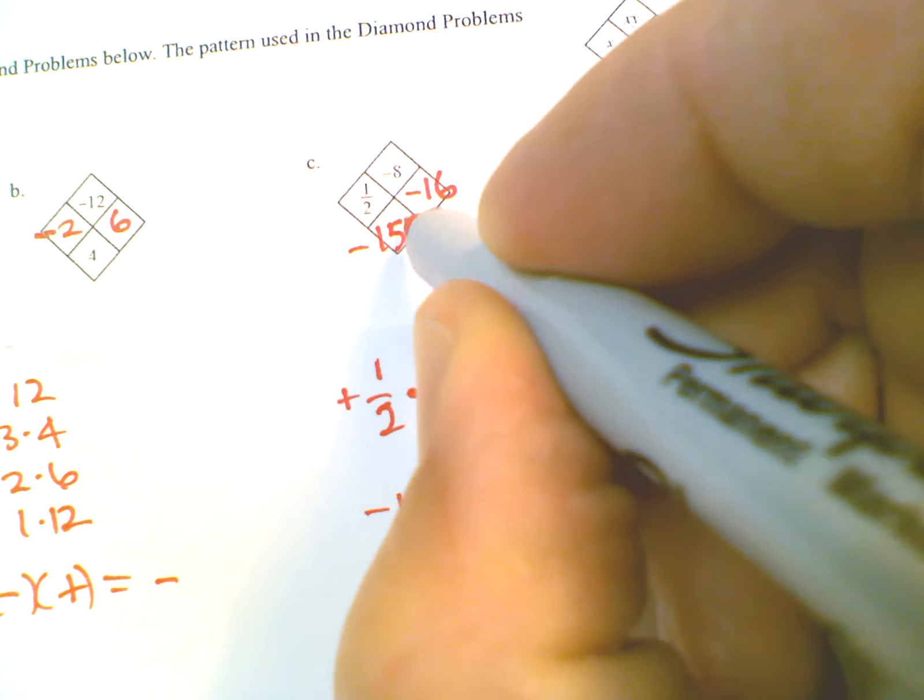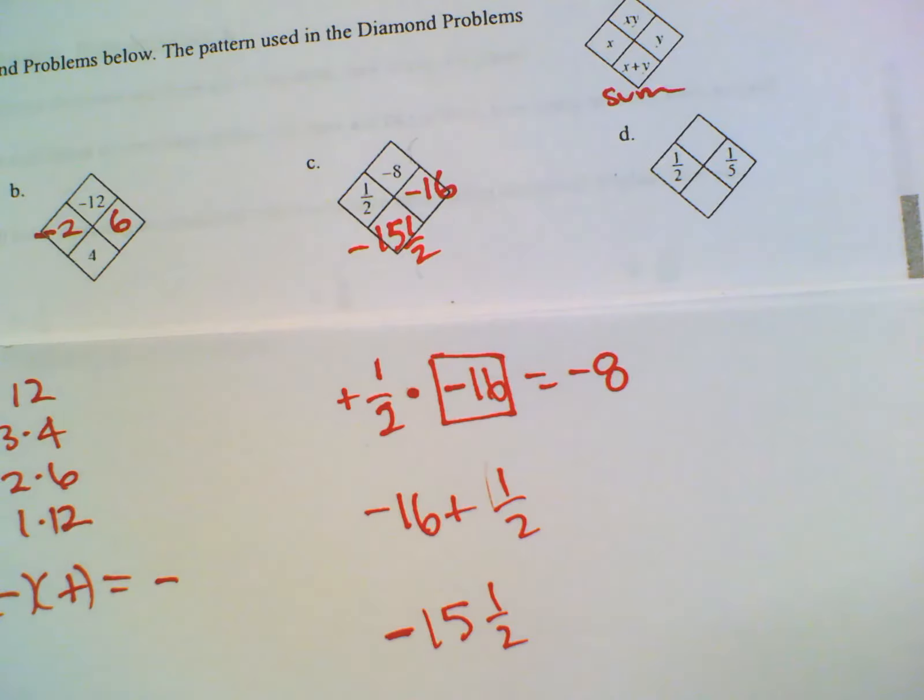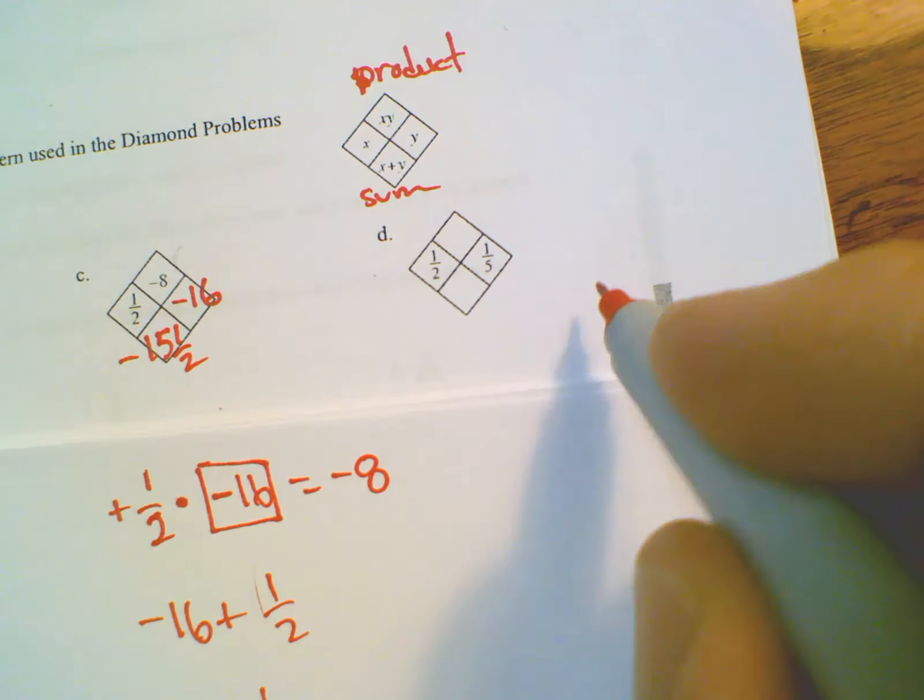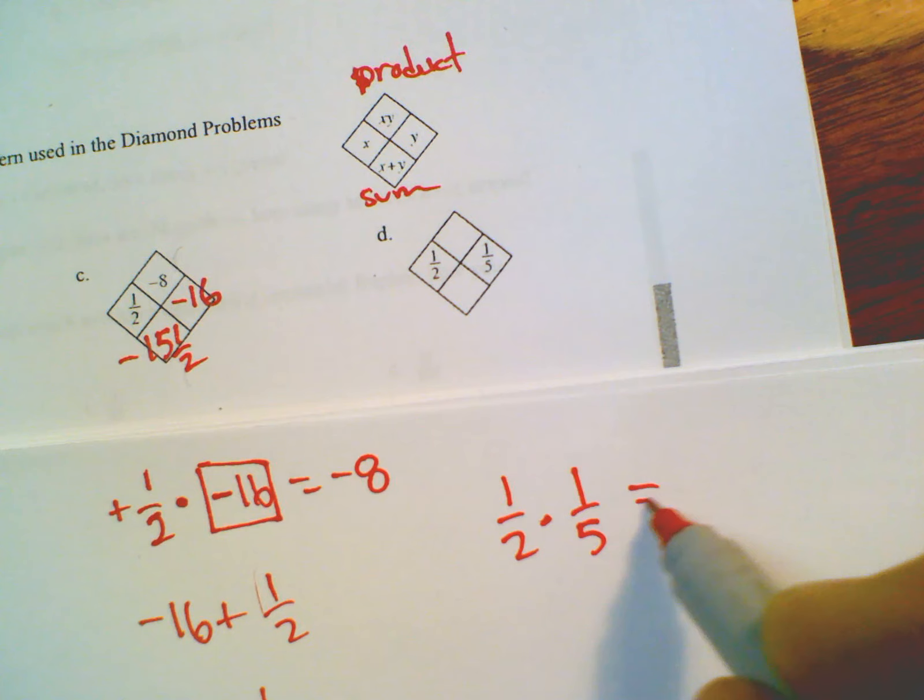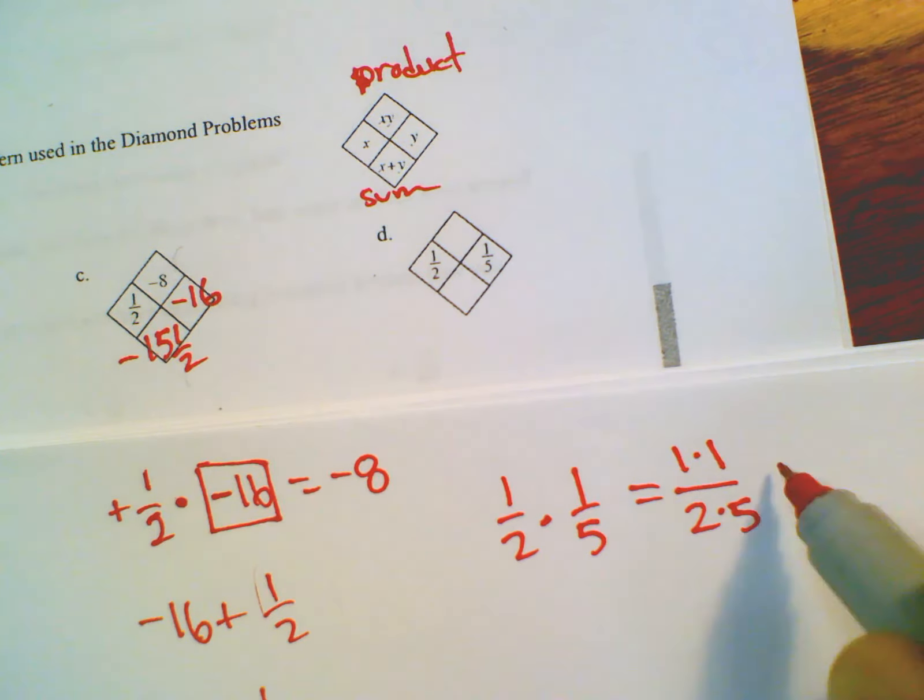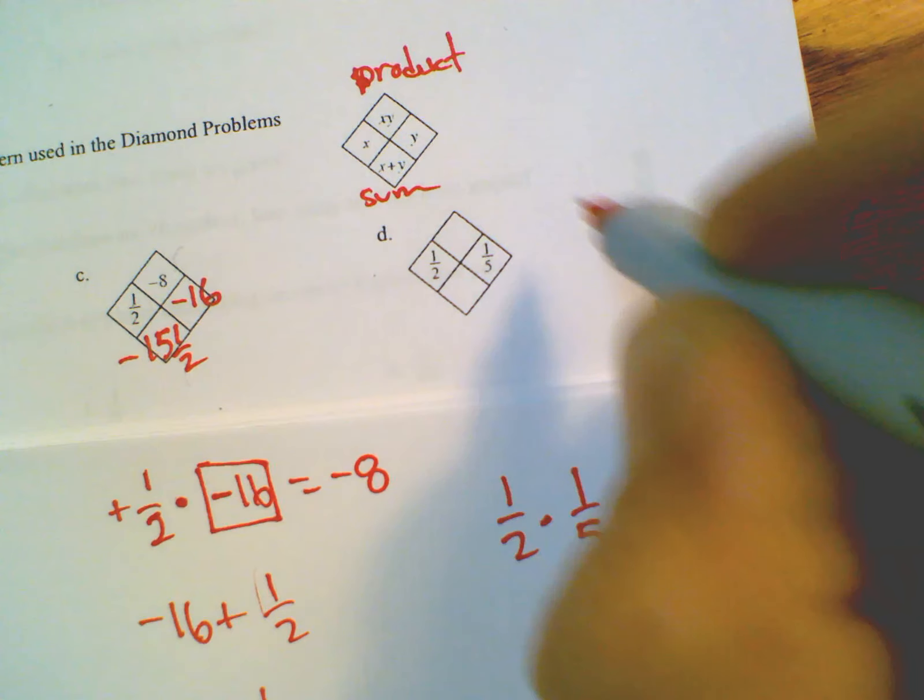Okay, last one, D. This time they give me my numbers. So first thing is the product: one half times one fifth. When you multiply fractions you just multiply straight across, one times one over two times five. So my answer is gonna be one tenth. So that goes on top, the product.